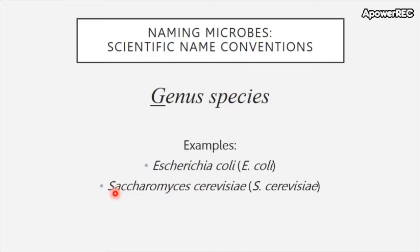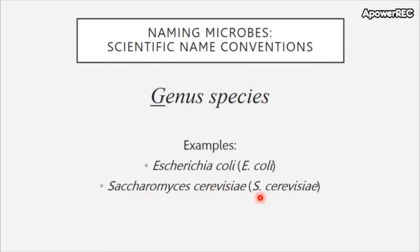Here's a second example: Saccharomyces cerevisiae. 'Myces' means fungi, 'saccharo' means sugar, and 'cerevisiae' means beer — so this is a sugar-eating fungus that makes beer. The whole name is italicized, capital S, lowercase everything else. After first use, abbreviate to S. cerevisiae. And finally, Salmonella enterica is named after Daniel Salmon who discovered it, and 'entero' is Latin for intestines.